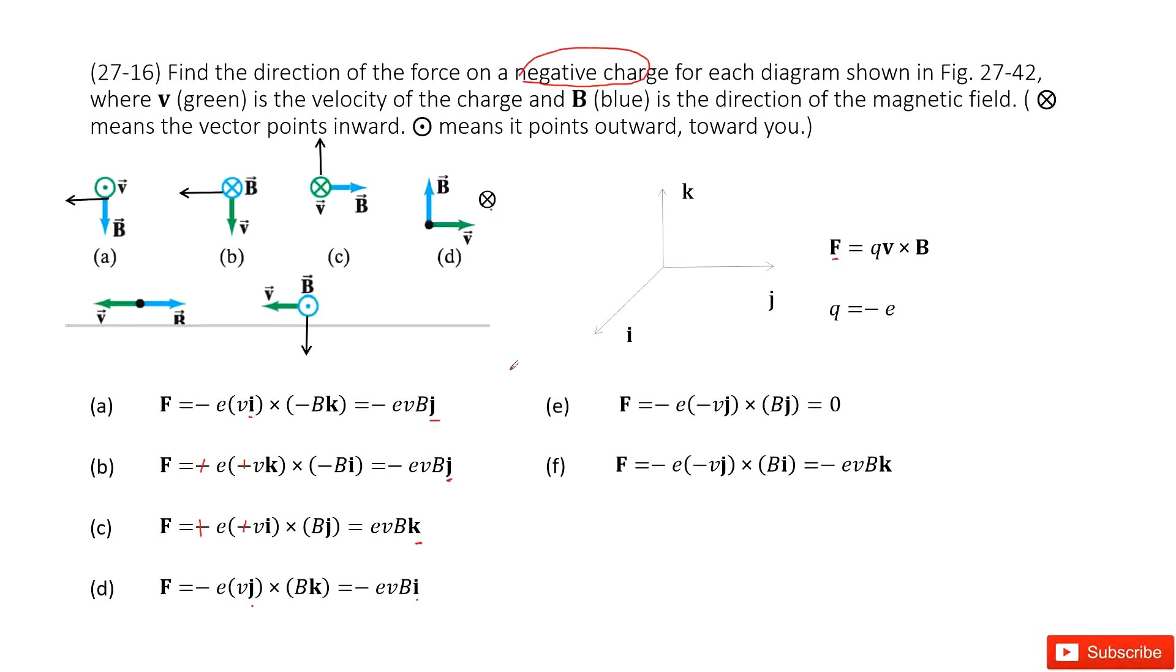The E case, we can see V is in negative J direction. B is in J direction. J cross J is zero. No problem.